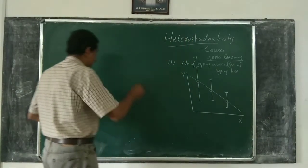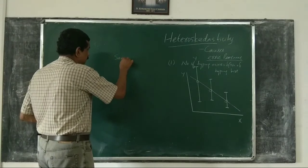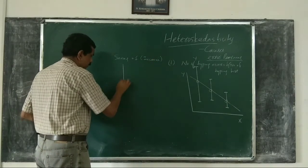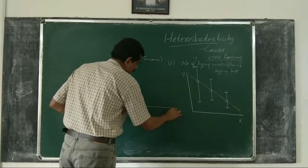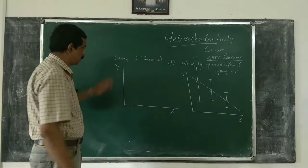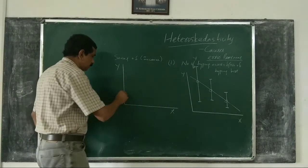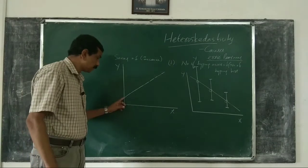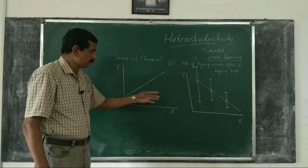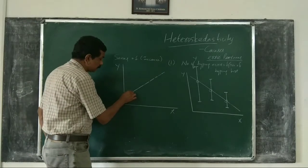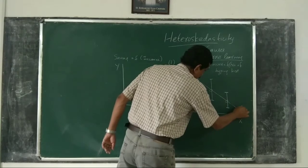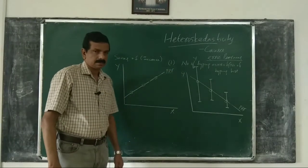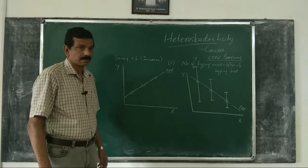Now consider another example: saving is a function of income. If you plot these observations, y is savings and x is income. As income increases, saving increases on average. This is the PRF, not the SRF — remember this. That is not our concern. Our concern here is what happens to the error variance.